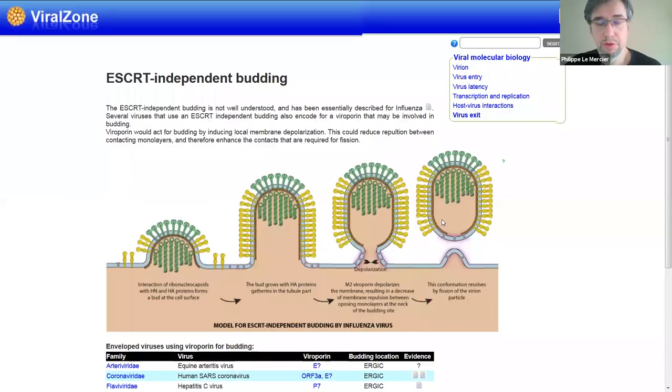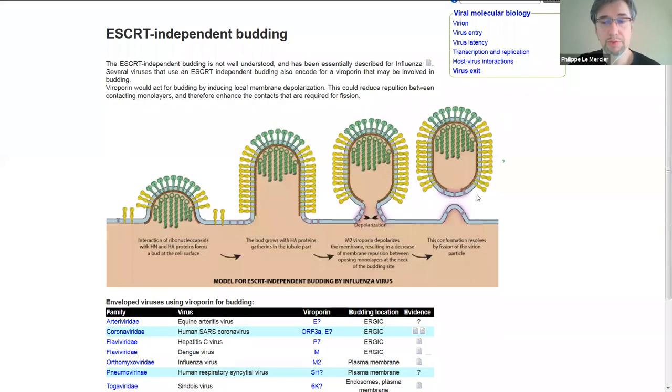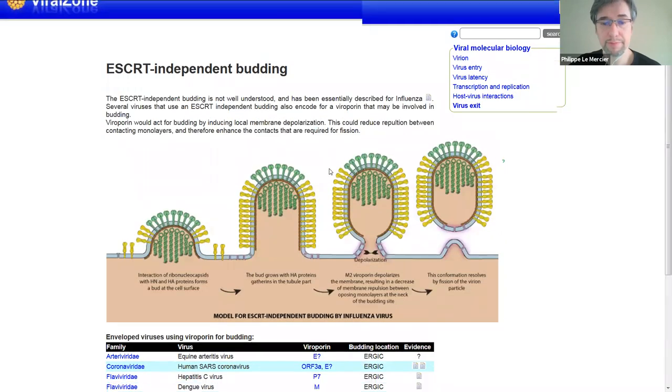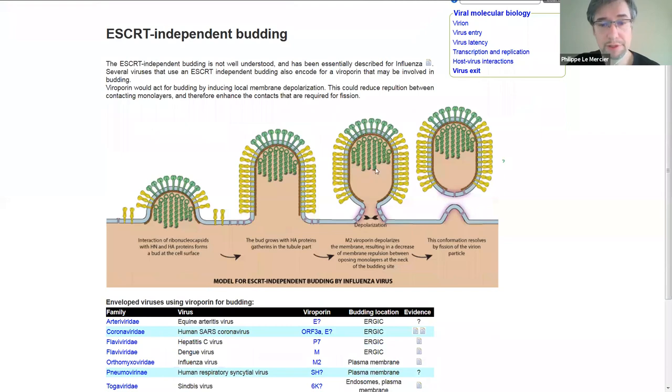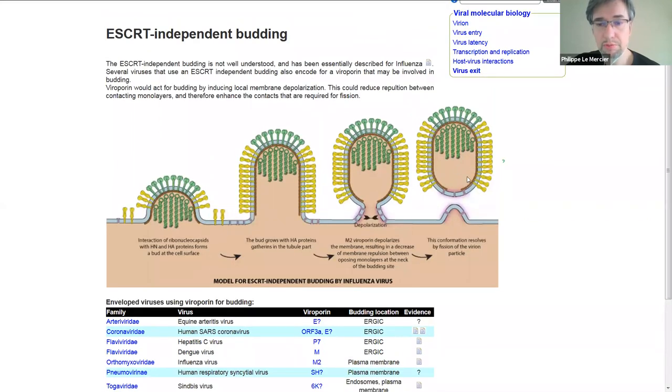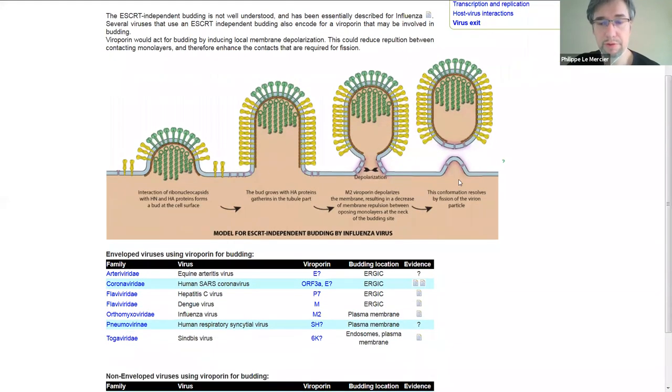An interesting part is budding. Viruses have pretty much two kinds of ways to bud out of the cell. It's ESCRT dependent. ESCRT is a system which allows the cell to bud out vesicles, and many viruses are using that. But some viruses, like influenza, coronavirus, or flaviviruses, are using a different system. It's a budding that involves viroporins, just small pores that by depolarization allow the pinch-off of the budding virus. You end up with a virus which is not completely symmetric. It's a real kind of scar of budding there, which is also a hallmark of coronaviruses.